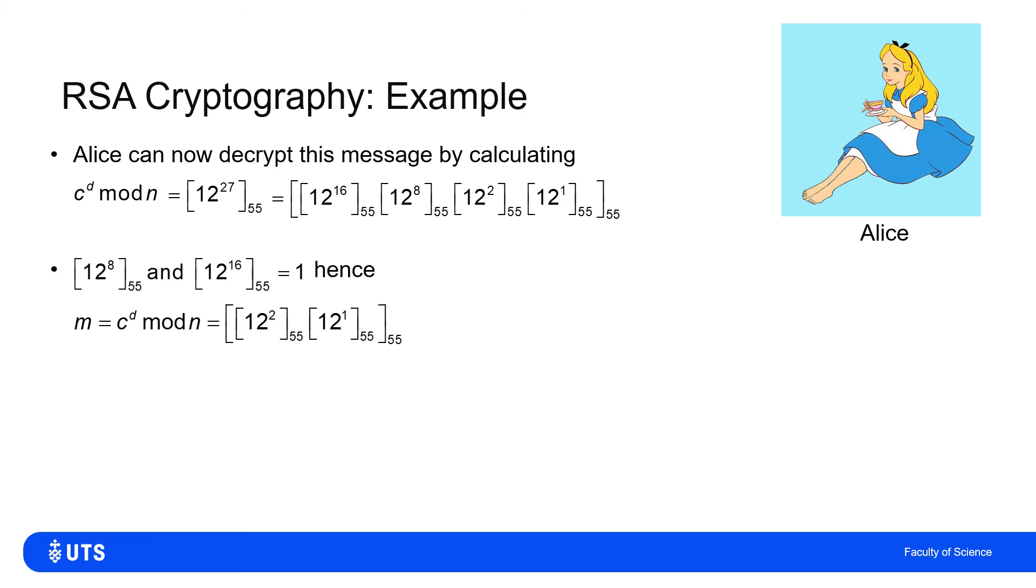Now, in this case, 12 to the 8 mod 55 is 1, and therefore any squared power of that, so a 16th, 32nd, 64th, and so on power, would also be equivalent to 1. So equivalent to 1 in the multiplication, I can basically forget.